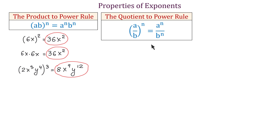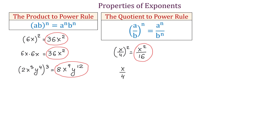The next rule is the quotient to power rule: (a over b) to the nth power equals a to the nth power over b to the nth power. So if a fraction is raised to an exponent, we need to raise both the numerator and the denominator to this exponent. For example, (x over 4) squared equals x squared over 4 squared, which makes x squared over 16. We can also write (x over 4) to the second power as x over 4 times another x over 4; then x times x is x squared and 4 times 4 is 16.